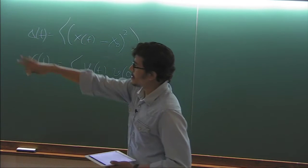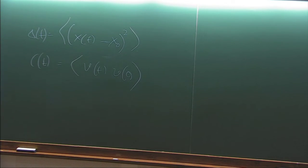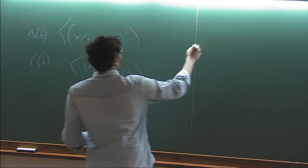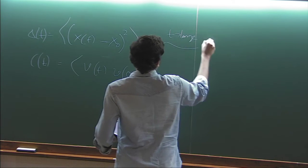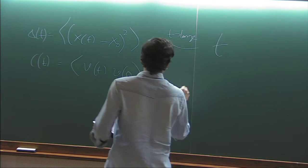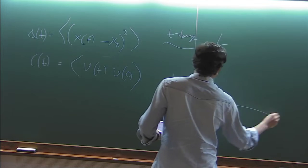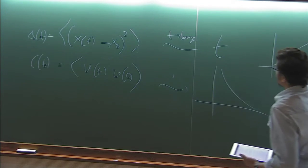So for that simplest model, what we learn in courses or very standard, is delta T at large T basically goes as T. And this velocity correlation goes as exponential. So these are the signatures.